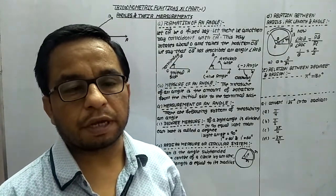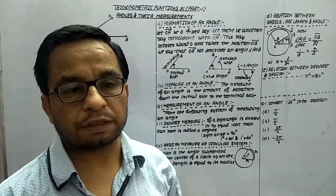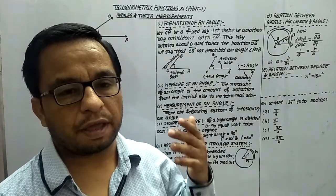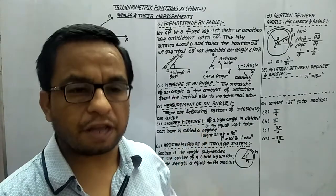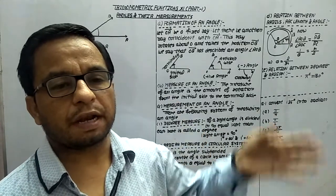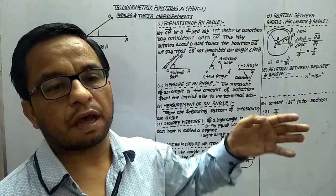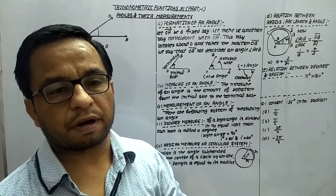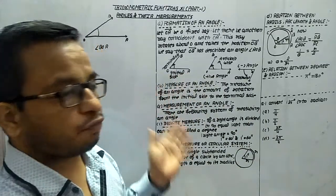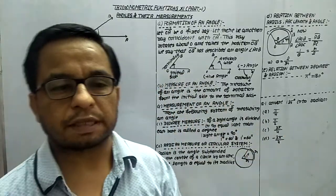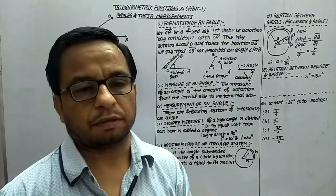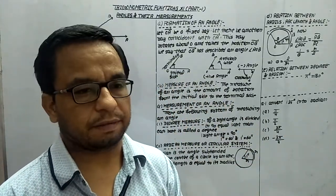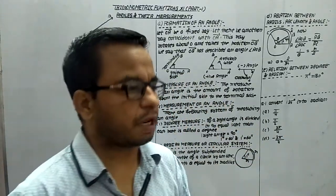In some books, it is also mentioned that there is a ray and that ray is moving and creating another position, then whatever part is formed that is known as the angle. So anything we can take.